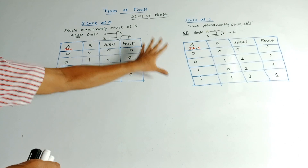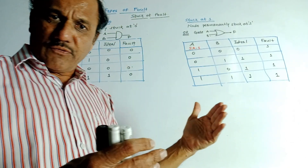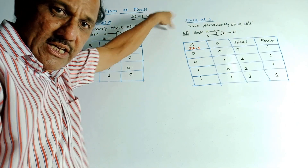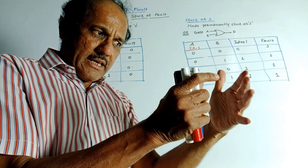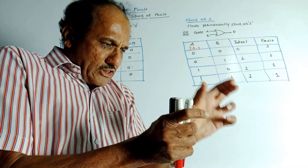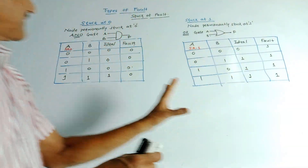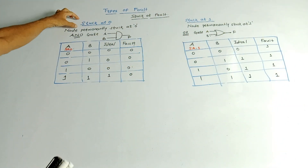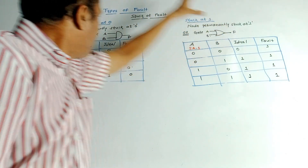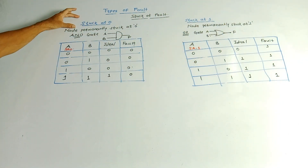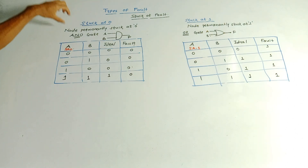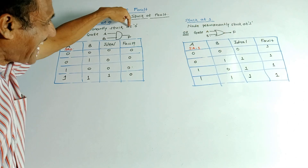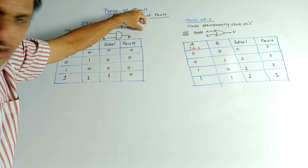We will discuss all the types of faults. The first type is stuck at fault. As the name indicates, any input is stuck at one particular level. In case of stuck at fault, there are two subcategories: stuck at zero and stuck at one. Stuck at zero means a particular node in the circuit permanently remains at logic zero — permanently stuck at logic zero.